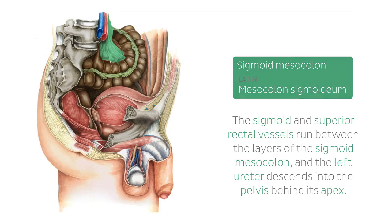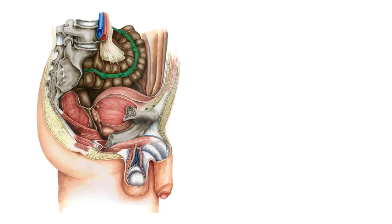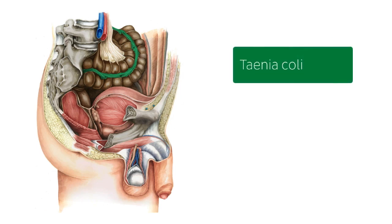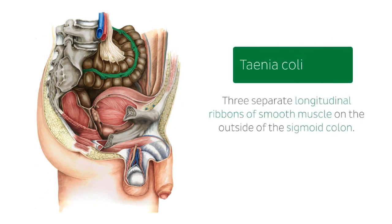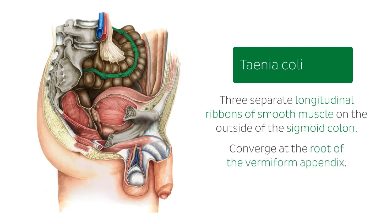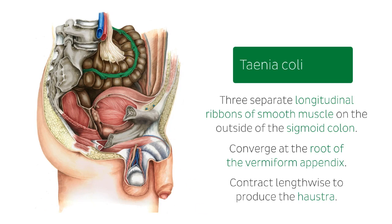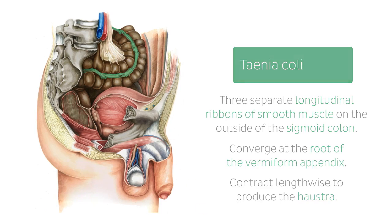The tenia coli, now highlighted, are three separate longitudinal ribbons of smooth muscle on the outside of the sigmoid colon. They are visible just below the serosa or fibrosa layers, converge at the root of the vermiform appendix, and contract lengthwise to produce the bulges in the colon known as haustra.